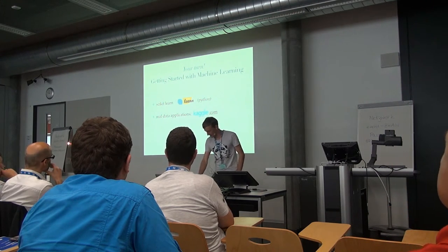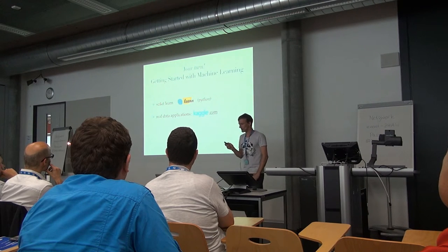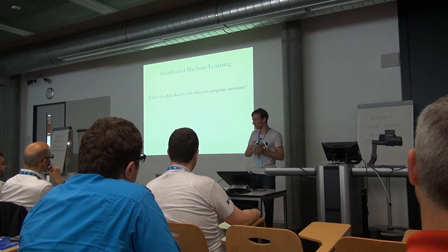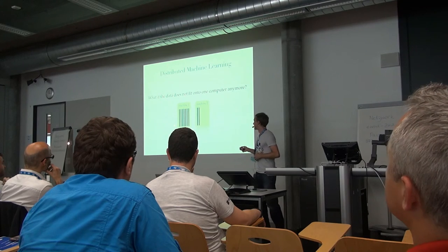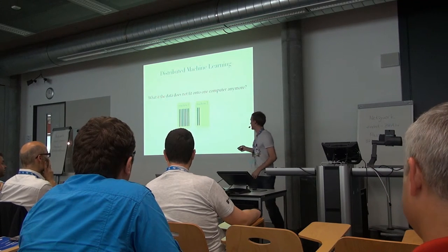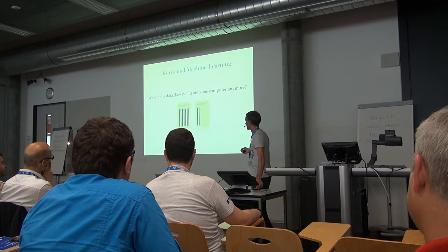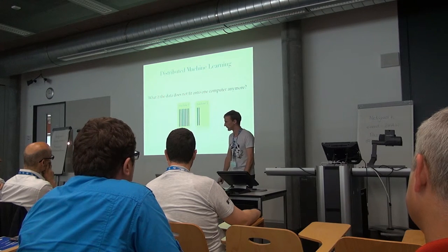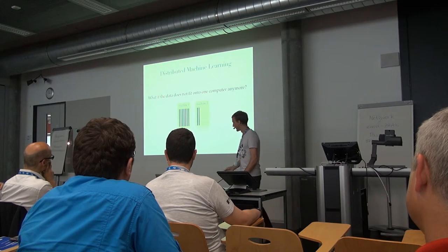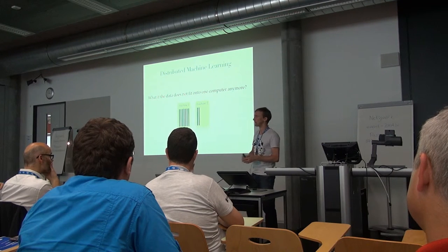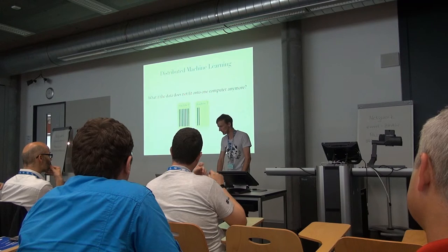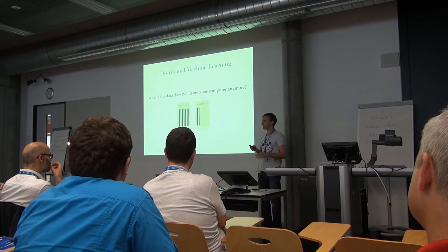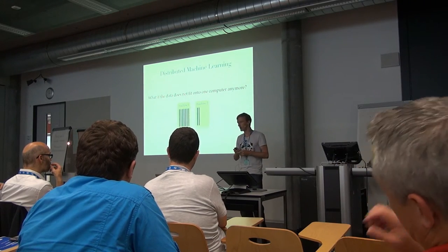That was machine learning on one computer. But now, what if the data does not fit onto one computer anymore — if you need maybe two computers? Here again are our data points, and so far everything was good: a nice algorithm for solving the task. But now the data has become too large and we need two machines. This is a big problem because the algorithms work very nicely on one computer but not on two anymore.